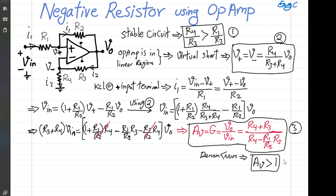Now for the input resistor — this is very straightforward. By definition, the input resistance Rin equals Vin divided by I1.